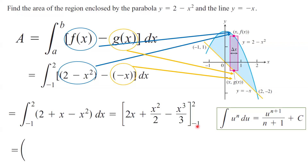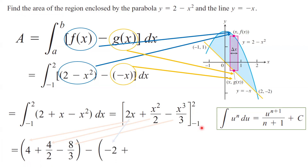Plugging in the upper bound 2: you get 2 times 2 which is 4, plus 2 squared divided by 2 which is 4 over 2, minus 2 cubed divided by 3 which is 8 over 3. Now plugging in the lower bound negative 1 and subtracting: you have negative 2, plus negative 1 squared divided by 2 which gives one half, minus negative 1 cubed divided by 3 which is negative 1 over 3 — and negative times negative gives positive, so you add one third. Doing the algebra, the final answer is 9 over 2.